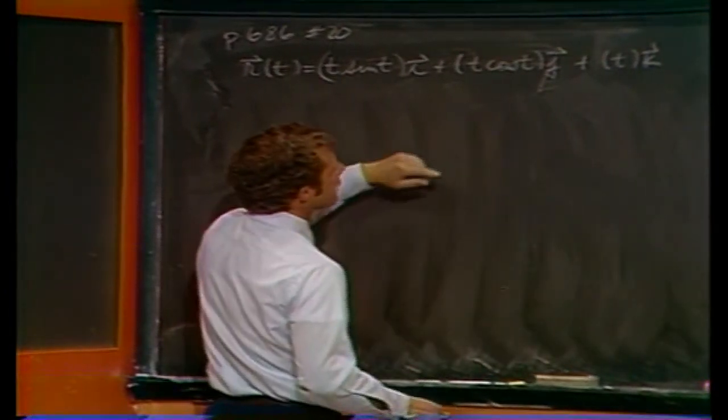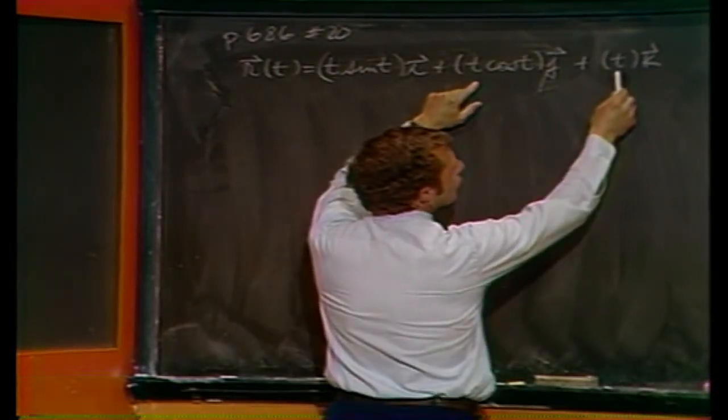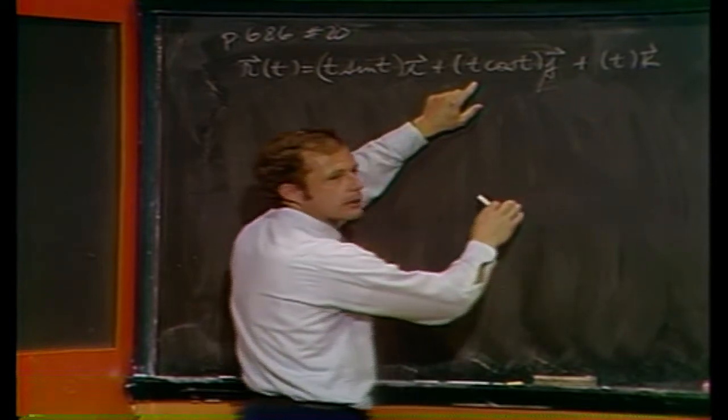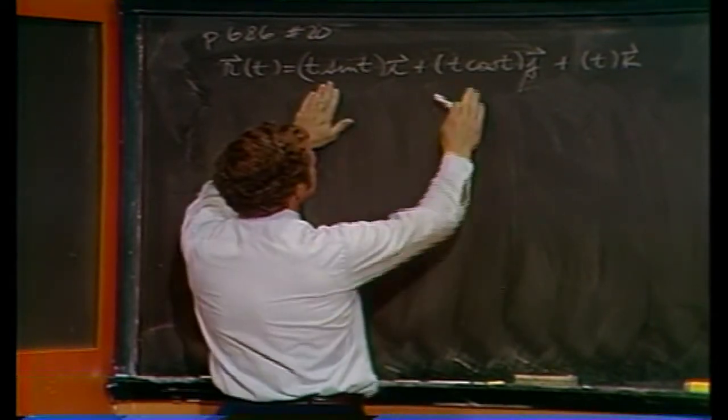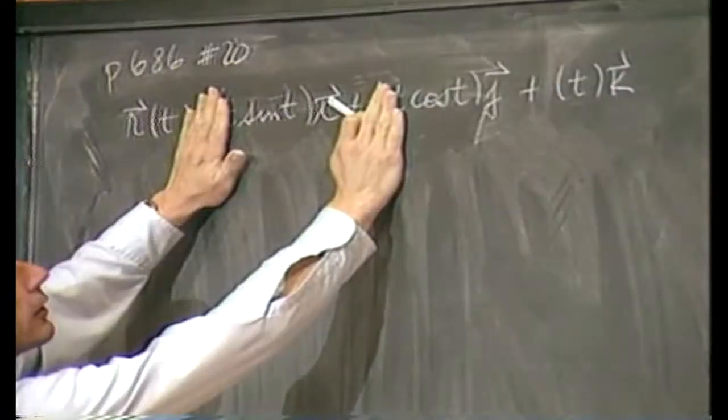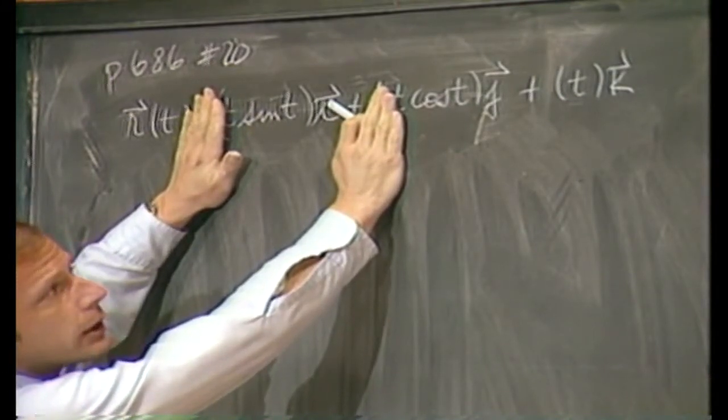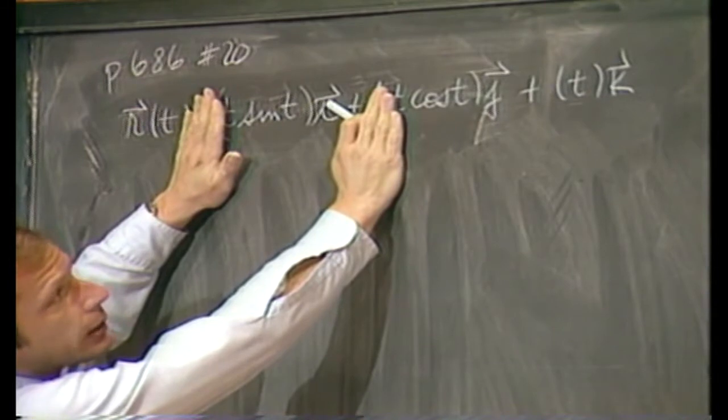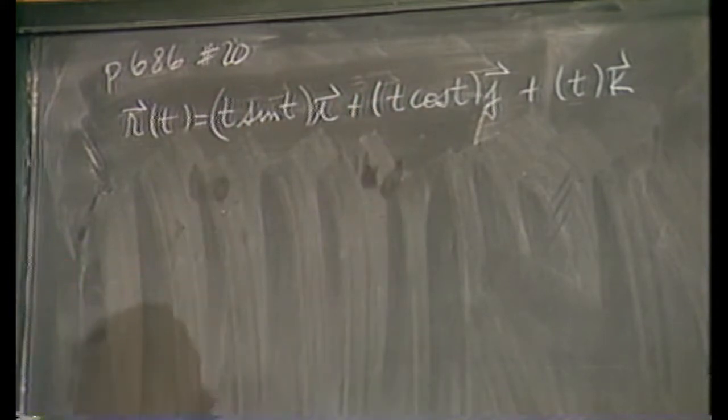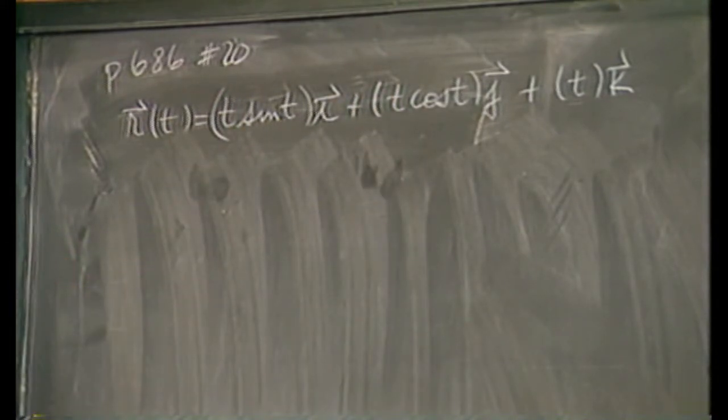Let me tip you off a little bit about a helix. What happens is one of your components is the variable itself and the other two components, if I cover up the t here, are sine and cosine of that third component. That would be a helix in some direction. We throw in an extra t, that changes it slightly, not a whole lot.